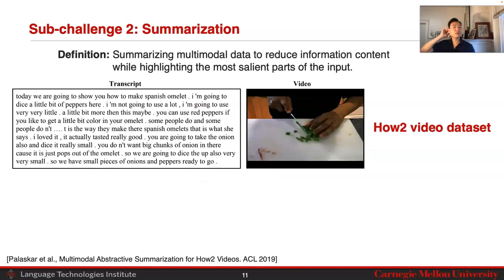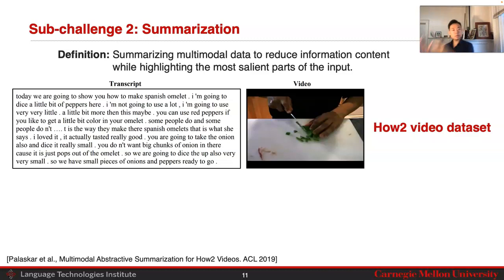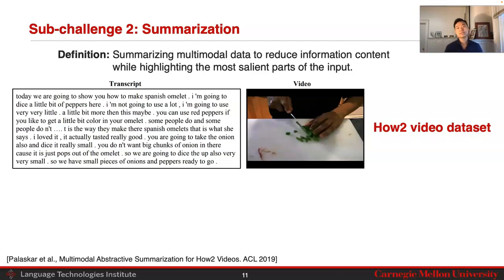We're also going to look at summarization. In this case, the goal is to take multimodal data that is very high-dimensional with large information content, and to try to reduce information content while highlighting the most important parts of the input. One of the biggest challenges in summarization is actually getting good datasets that have both the input — high-dimensional multimodal data — and the output — the summarized most important parts — both annotated.